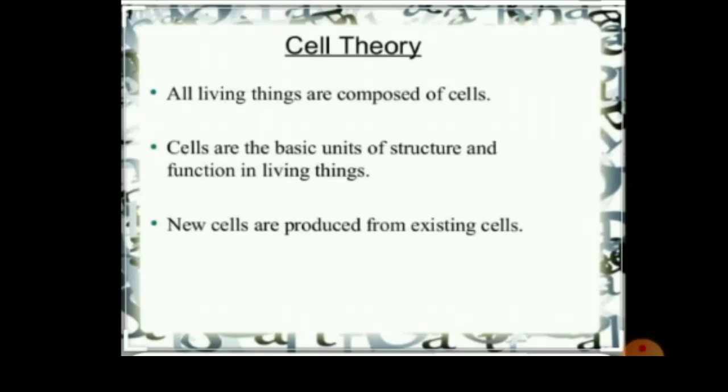After all the work done by different scientists, cell theory finally took shape. The postulates of cell theory are: number one, all living things are composed of cells; number two, cells are the smallest living things and the basic unit of organization of all living organisms; number three, cells arise only from previously existing cells, meaning new cells are produced from existing cells.